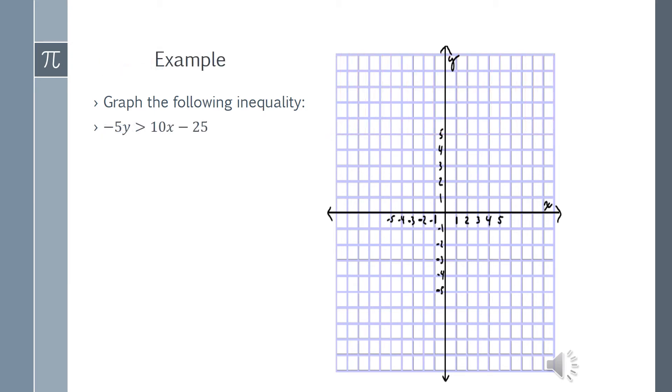Here's another example. Pause the video at this point to give yourself a chance to do the work. So the first thing I need to do is to get this into slope intercept form. I need to do that by dividing both sides by negative 5. Remember that when you're dividing by a negative number, you must switch the direction of the sign. So now I have y is less than negative 2x plus 5.